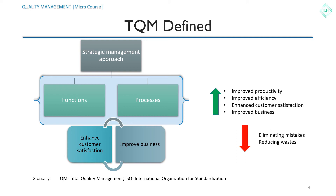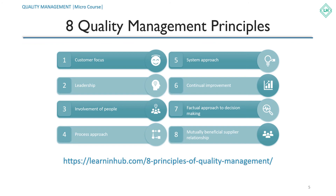There are eight basic principles that act at the core of total quality management. As defined by ISO, these eight principles are: customer focus, leadership, engagement of people, process approach, system approach, improvement, factual approach to decision making, and mutually beneficial supplier relationship.